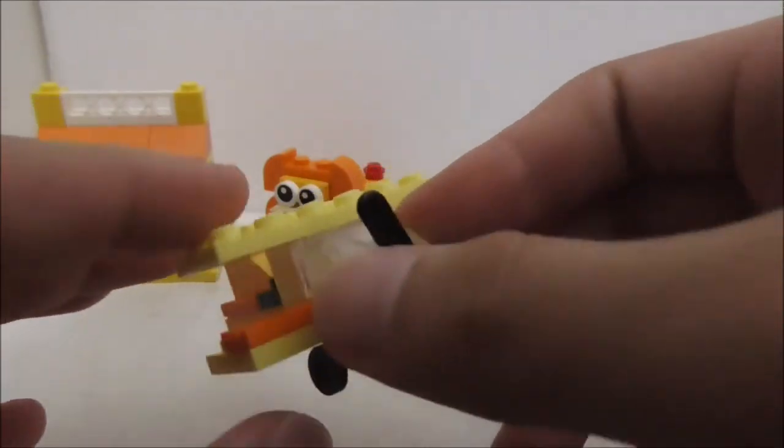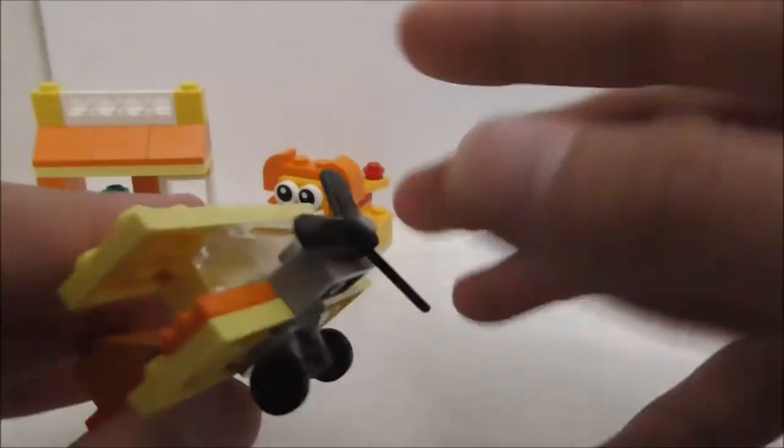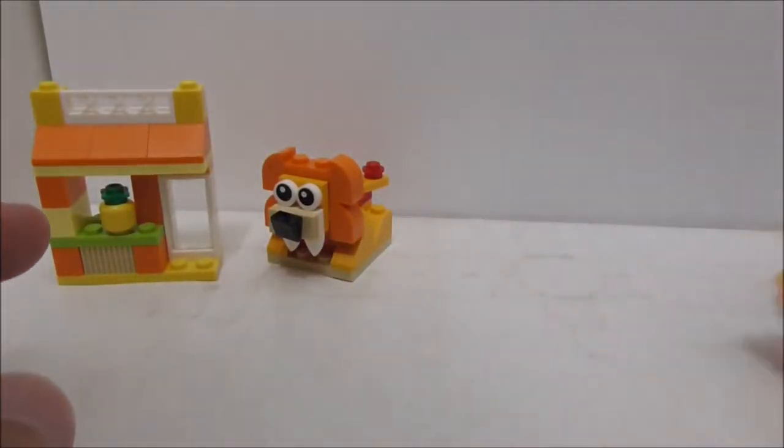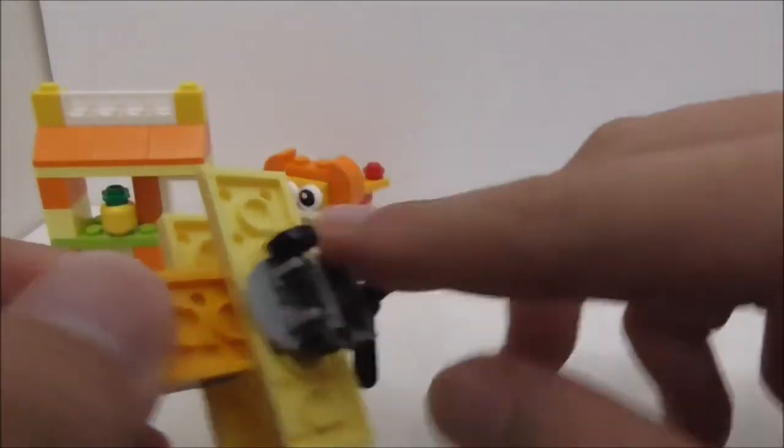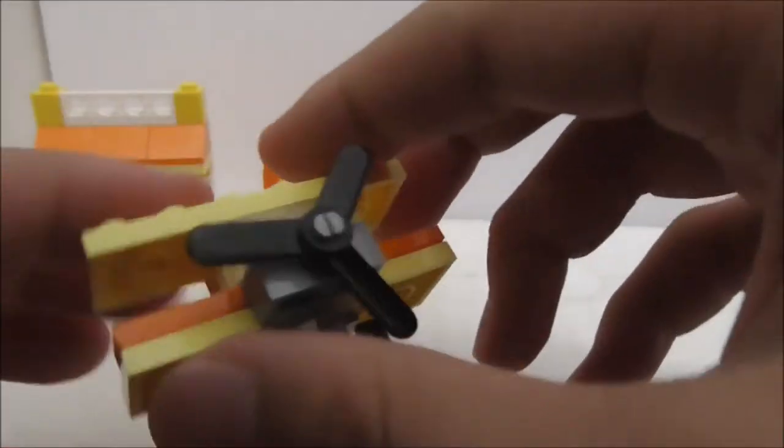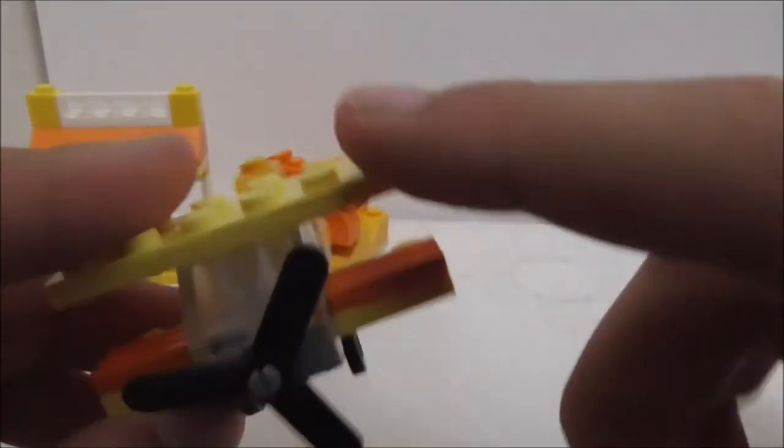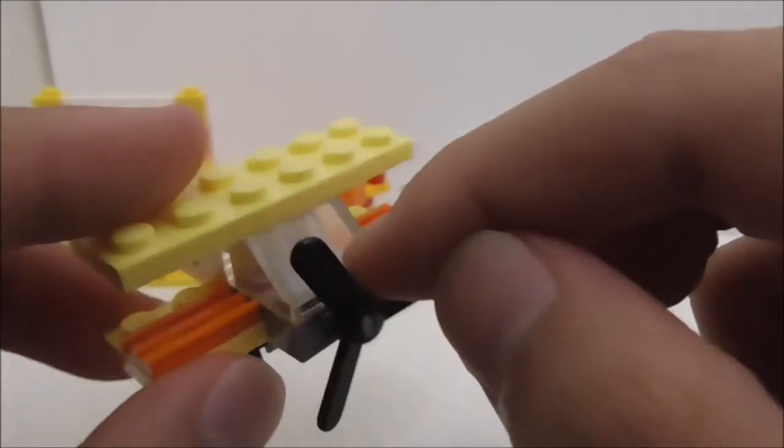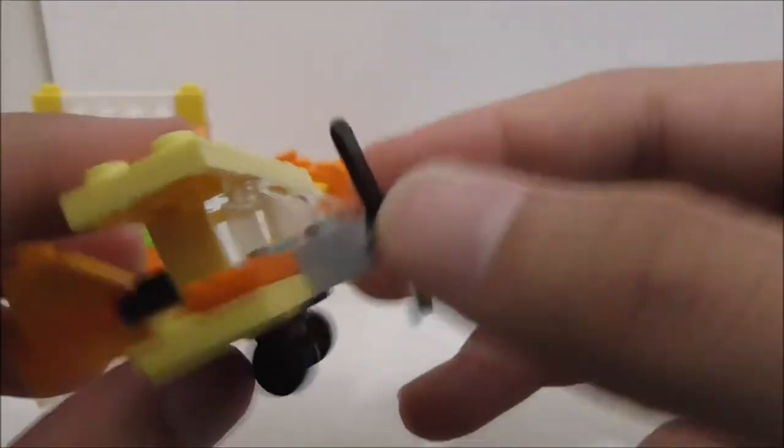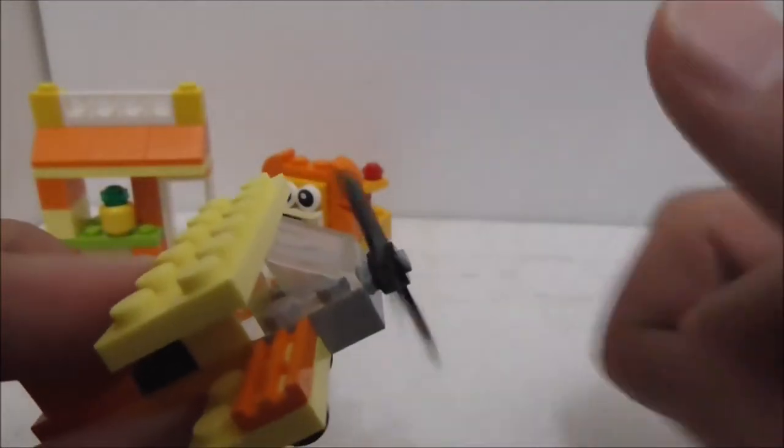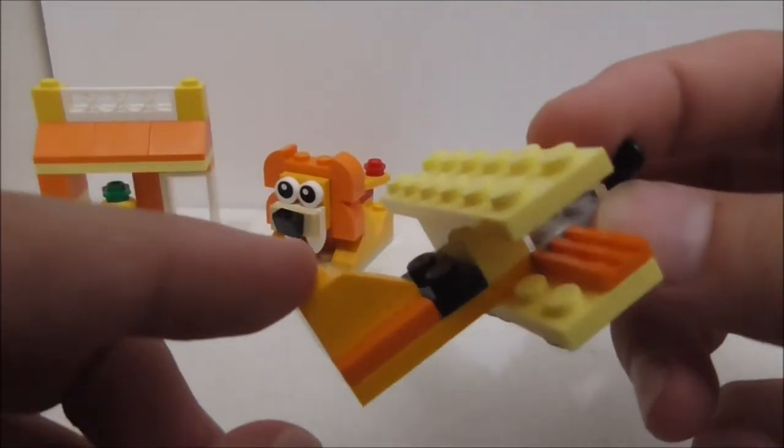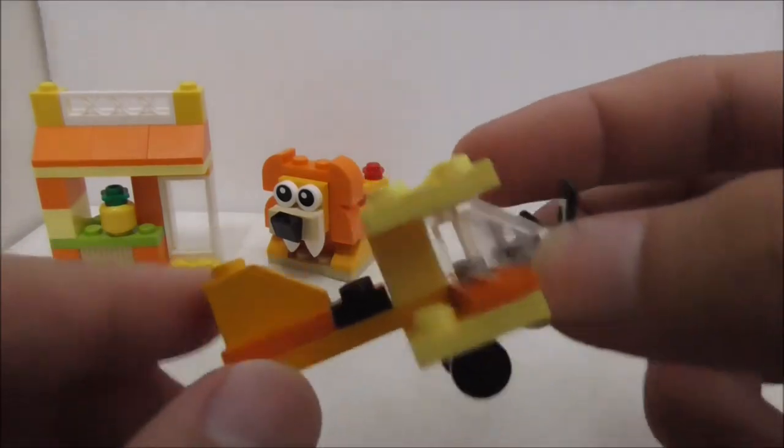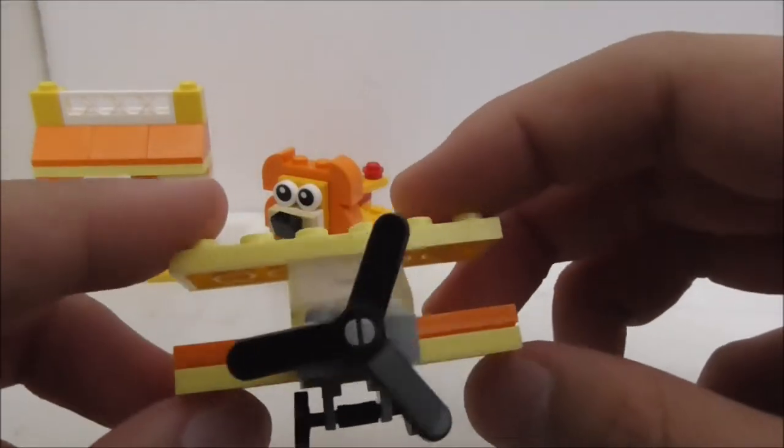This is the third level of the build, which is this biplane type thing. You got the wheels at the bottom and you can kind of take off. It's pretty cool. You got two of these wings, one at the top and one at the bottom. You got the cockpit which is just this transparent piece. You got the propeller which can spin and you got the back tail piece. But except for that, that's pretty much it for all of the builds.